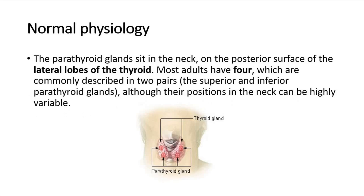The parathyroid glands sit in the neck, on the posterior surface of the lateral lobes of the thyroid. Most adults have four, which are commonly described in two pairs — the superior and inferior parathyroid glands — although their positions in the neck can be highly variable.